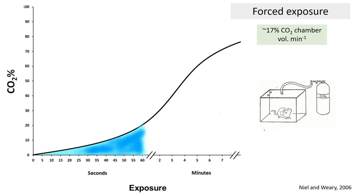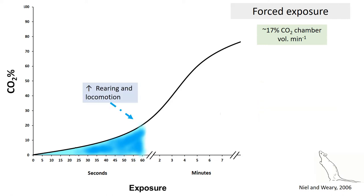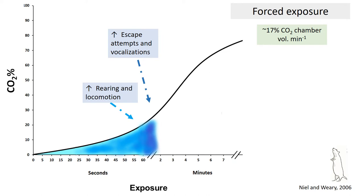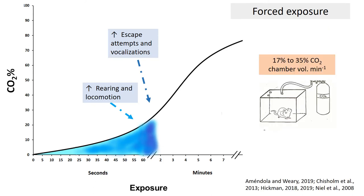When rats are exposed to gradually increasing concentrations of CO2 at a flow rate of around 17% CO2 cage volume per minute, without the possibility to escape exposure, behavioral responses such as rearing and locomotion peak when CO2 reaches about 20%. Escape attempts and vocalizations occur at 28% CO2. An increase in these behavioral responses has also been reported at higher flow rates.